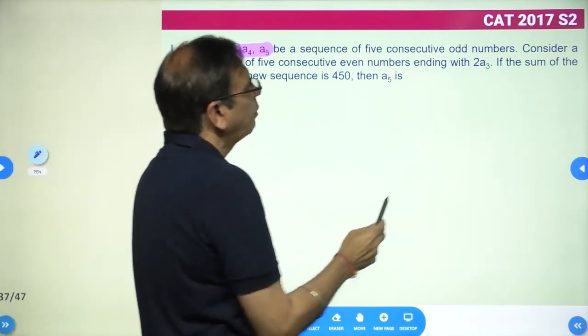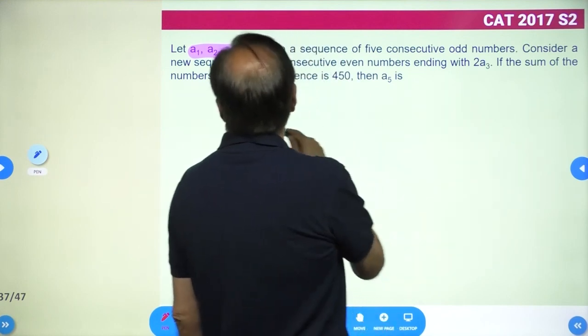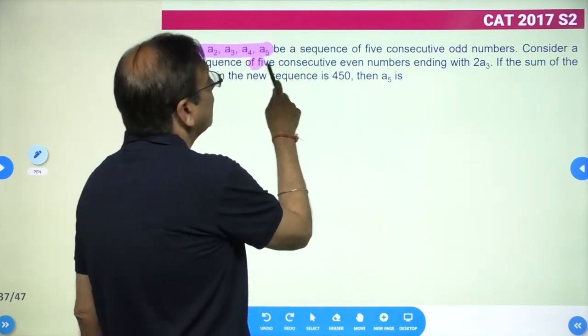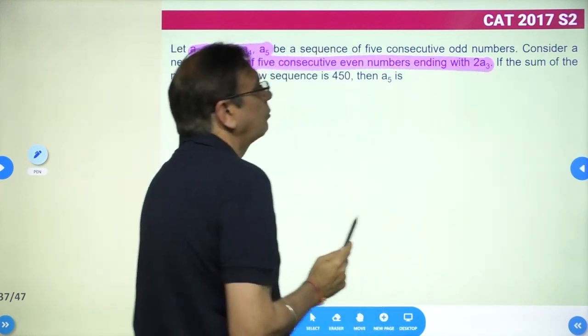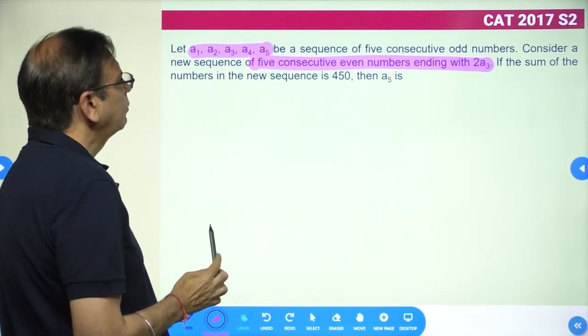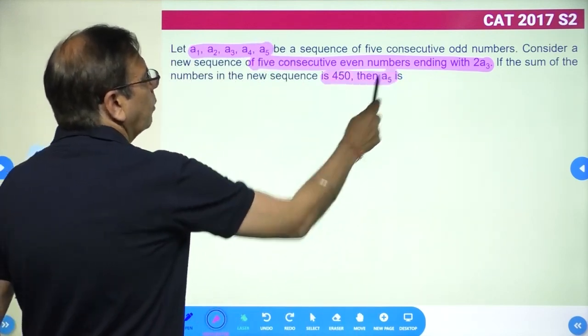Let a1 to a5 be a sequence of 5 consecutive odd numbers. Consider a new sequence of 5 consecutive even numbers ending with twice of a3. The sum of numbers in the new sequence is 450. What is a5?